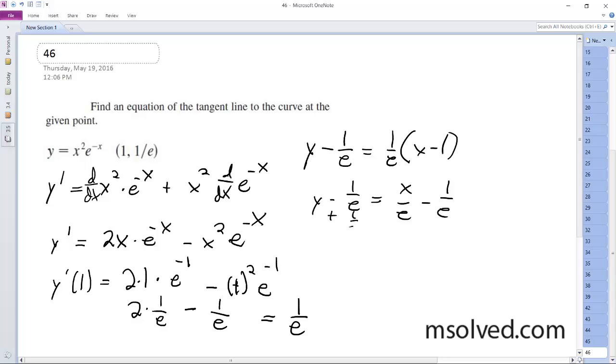So plus 1 over e, plus 1 over e, y is equal to x over e, and these cancel out. So it's just y is equal to x over e, and that's it.